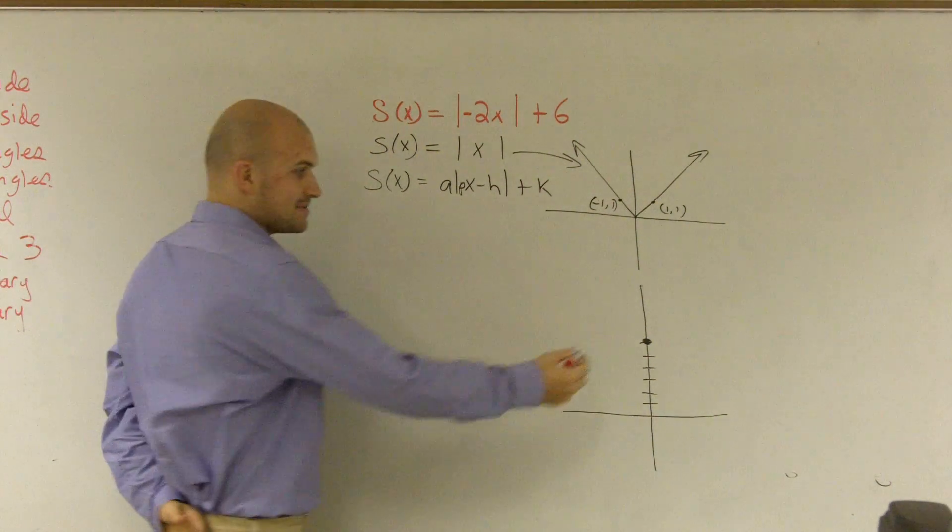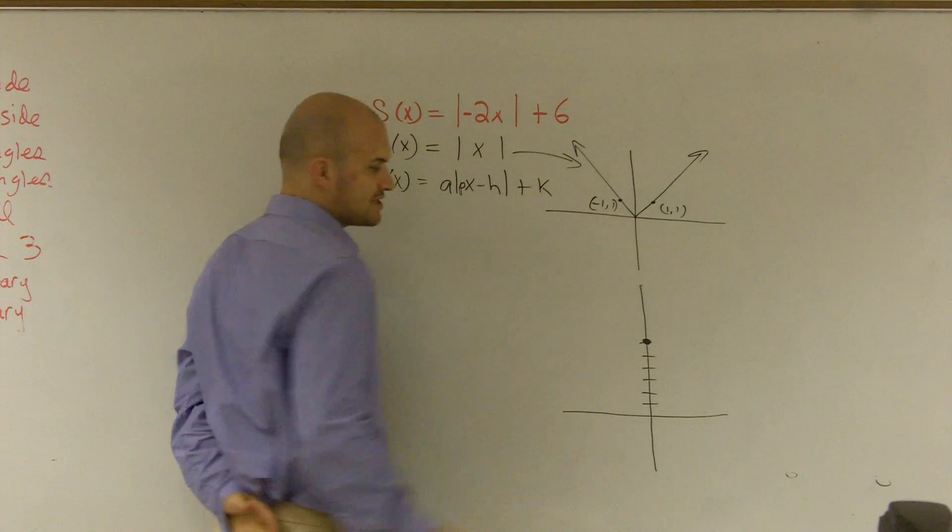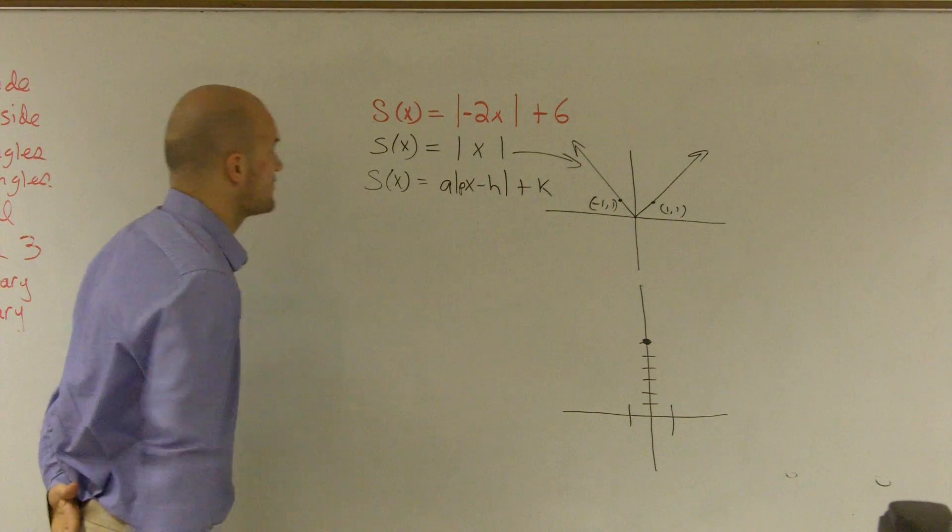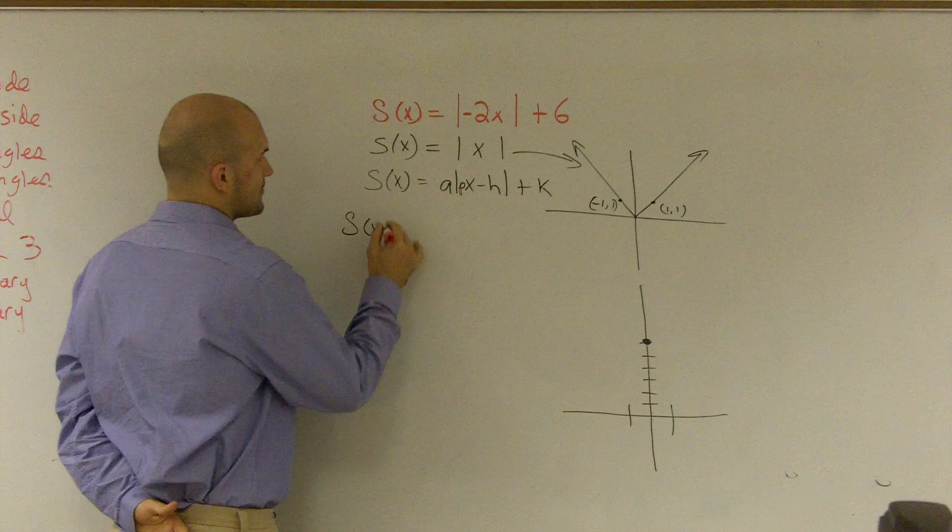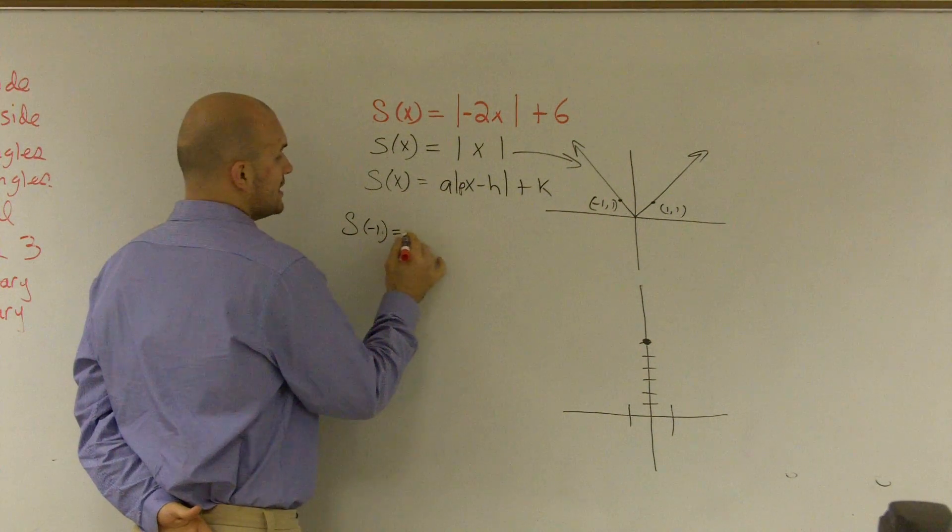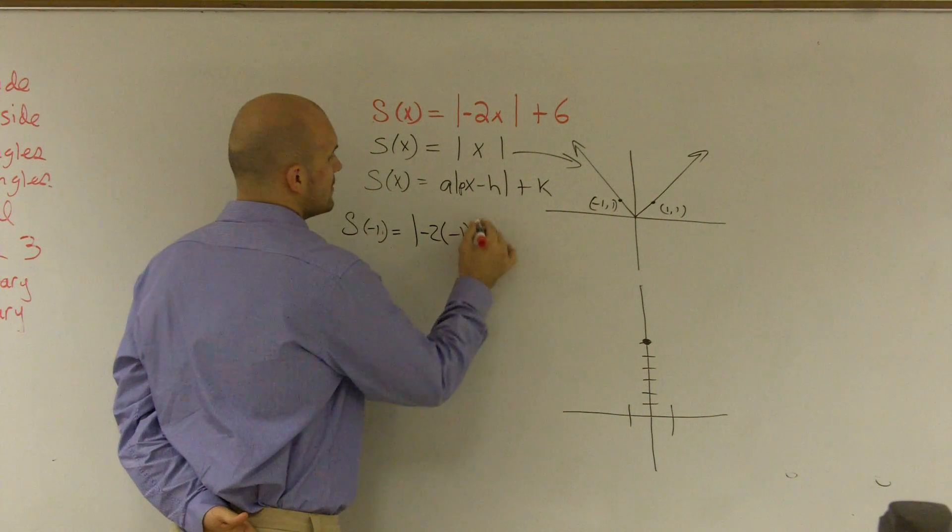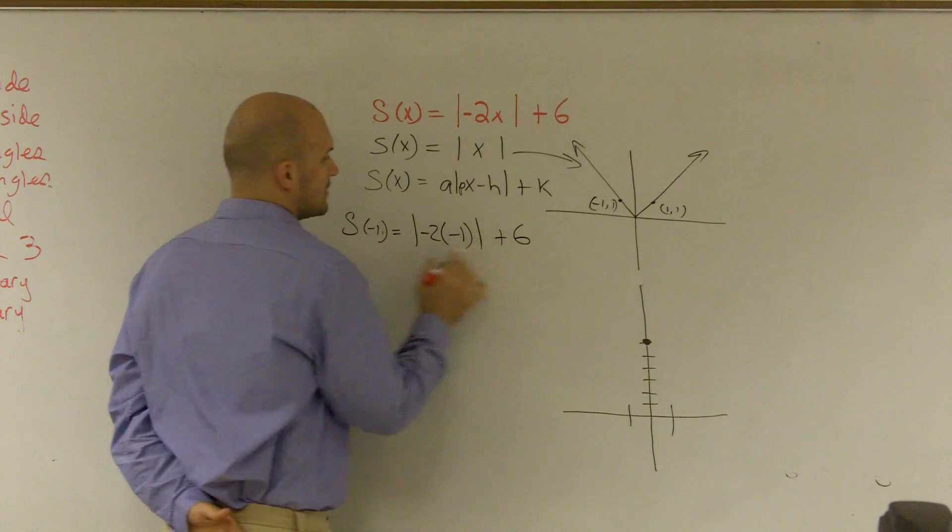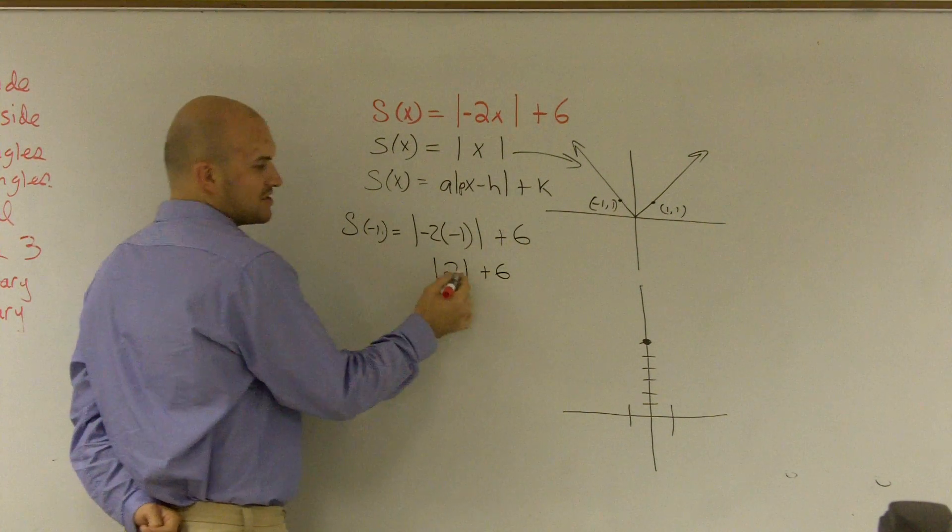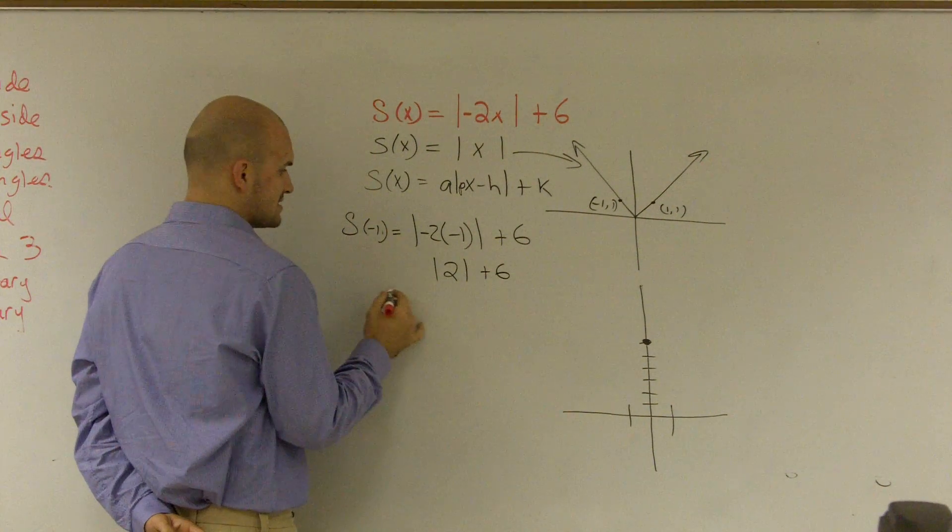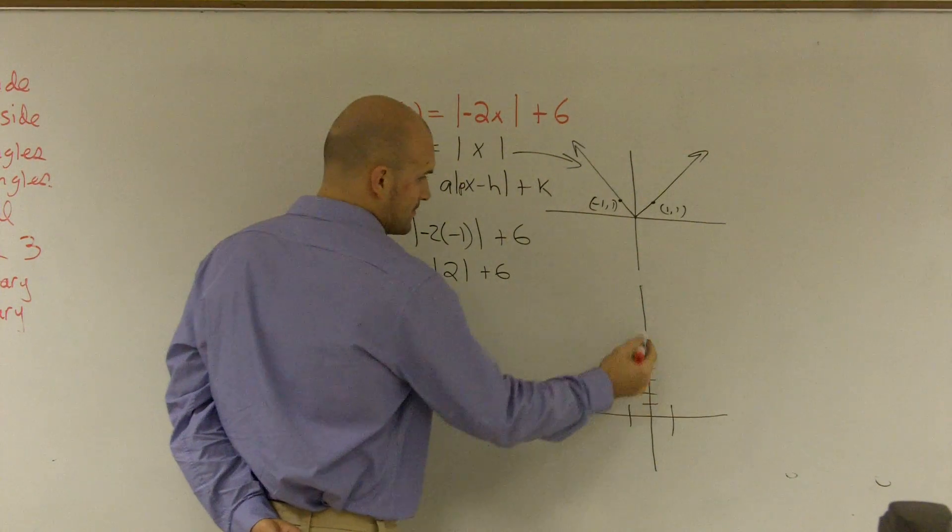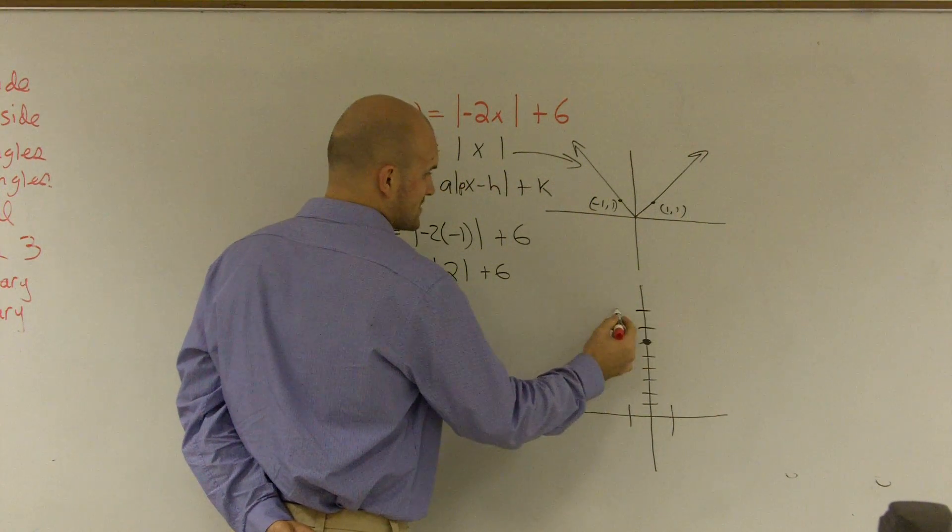Then the next thing I'm going to do is, I'm just going to pick a point to the left and pick a point to the right. So let's not make this difficult. Let's just pick negative 1 and positive 1. So what I'll do is s of negative 1 equals absolute value negative 2 times negative 1 plus 6. Negative 2 times negative 1 is going to be a positive 2. The absolute value of 2 is obviously 2. 2 plus 6 is 8. So you can see s of negative 1 equals 8.